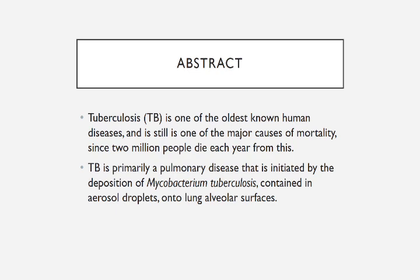TB has many manifestations affecting bone, the central nervous system, and many organ systems. But progression of the disease can have several outcomes, determined largely by the response of the host immune system.